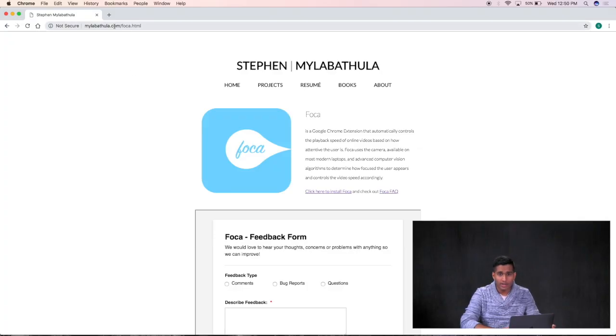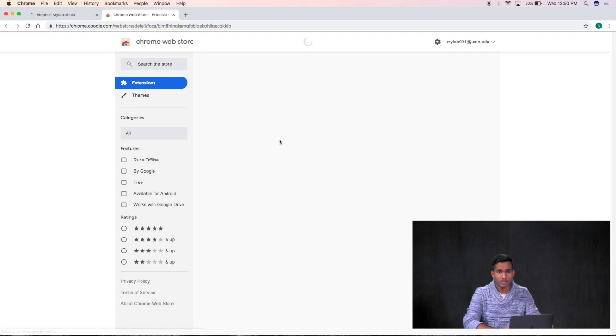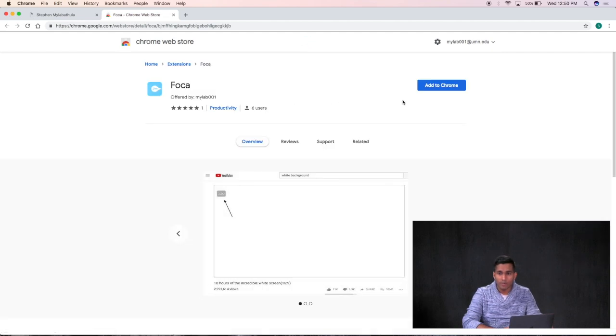I'm at the FOCA homepage right now, milobothula.com/foca.html. There's a link right here for you to install FOCA. I've also included the link in the description for the video so you can either copy paste that link or just click this right here. You'll get to the FOCA homepage on the Chrome web store. Just hit add to Chrome, add extension.